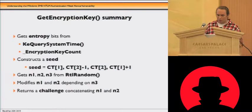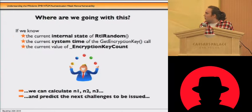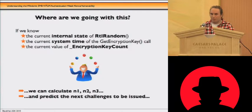We know that the current encryption key function gets entropy from the current system time and also from the counter. We create a seed, call RTLRandom, and return a challenge. So if we know the internal state of RTLRandom and the current system time and also the value of the encryption key count, we can calculate all the numbers returned by RTLRandom and predict the challenge to be issued in the future.